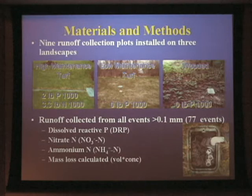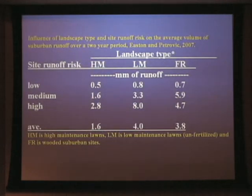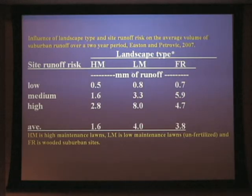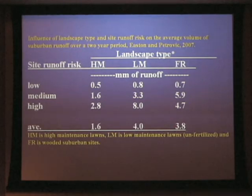This was not simulated runoff events, and we measured a whole bunch of different parameters in that. This is what we found for the volume of runoff over this given two-year period. On average, with a high-maintenance lawn, there was about 1.6 millimeters of runoff, 4 millimeters in the low-maintenance lawns, and the wooded areas had about 4 millimeters of runoff.